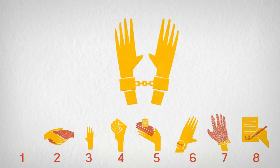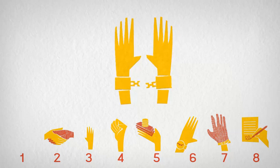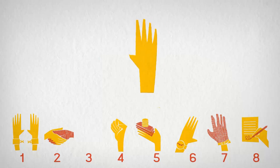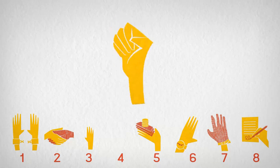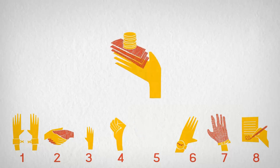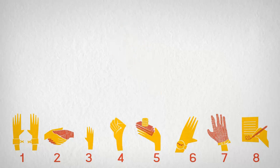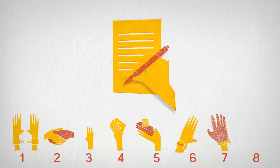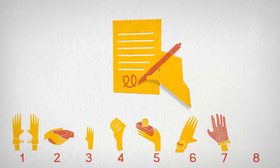Employment is freely chosen, meaning it's not forced or coerced. There's no discrimination and no child labor. Workers' freedom of association and the right to collective bargaining are respected. There is payment of a living wage, reasonable hours of work, a safe and healthy working environment, and a legally binding employment relationship, that is, a fair and legal contract.